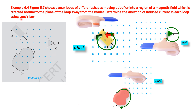In this video we are going to see Figure 6.7, which shows planar loops of different shapes moving out of or into a region of magnetic field directed normal to the plane of the loop, away from the reader. We need to determine the direction of the induced current in each loop using Lenz's law.